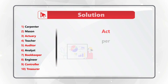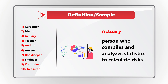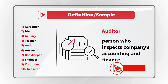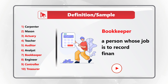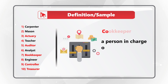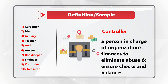For example, actuary is a person who compiles and analyzes statistics to calculate risks for the organization. Auditor is the person who inspects company's accounting and finance. Bookkeeper is a person whose job is to record financial affairs of the business. Controller is the person in charge of the organization's finances to eliminate abuse and ensure systems of checks and balances.